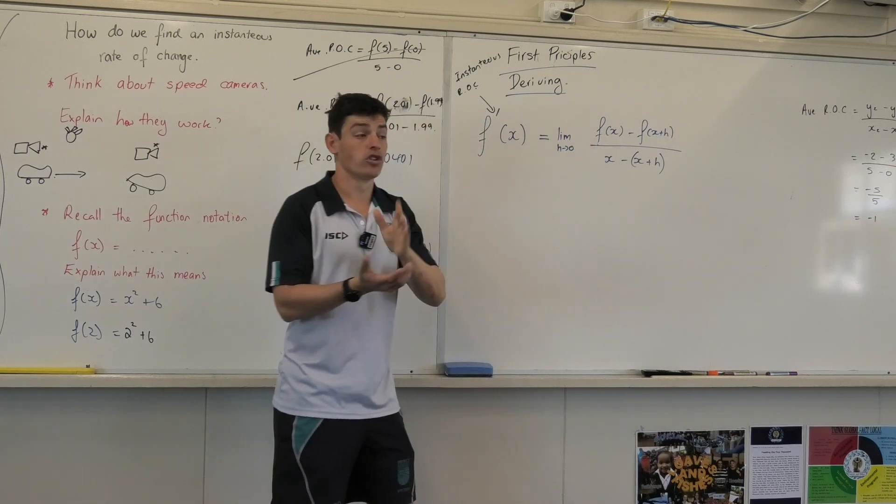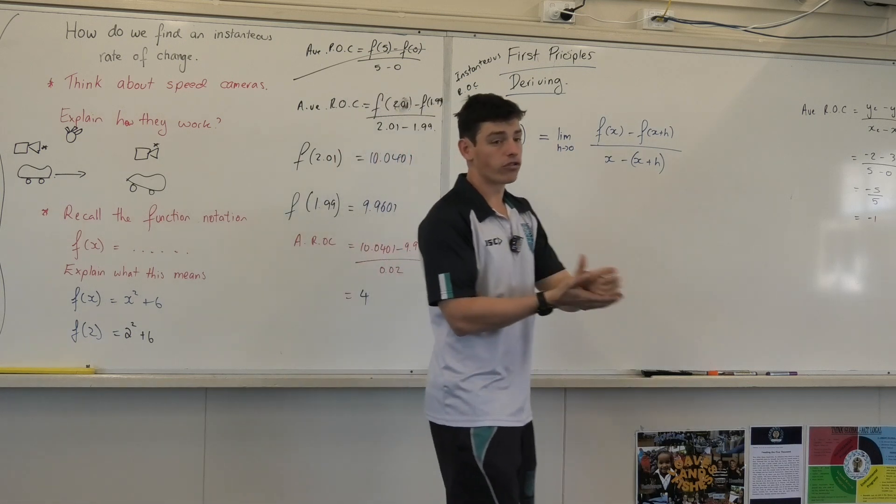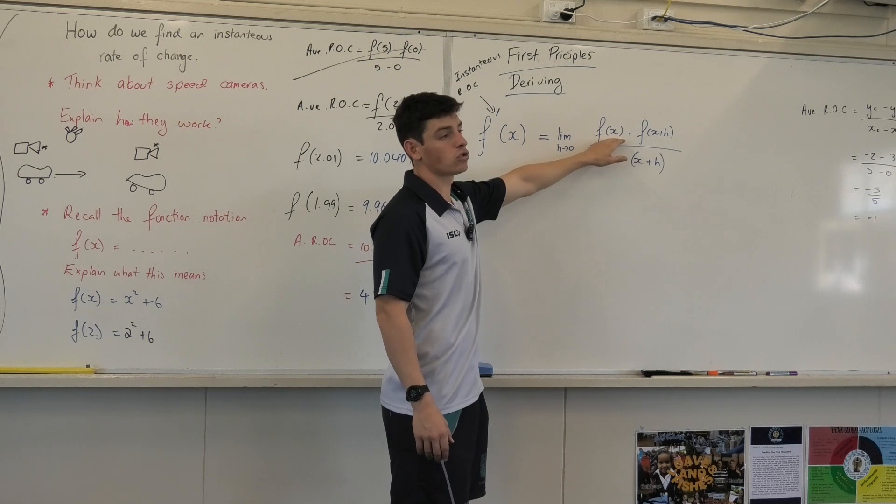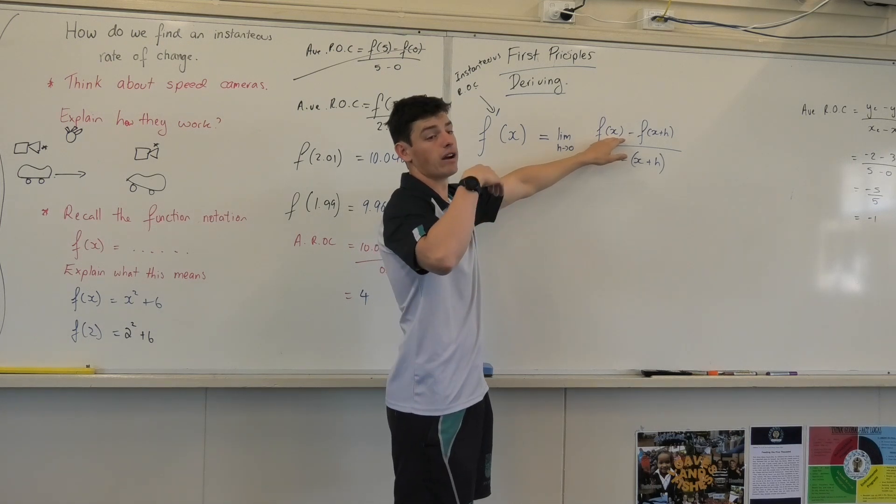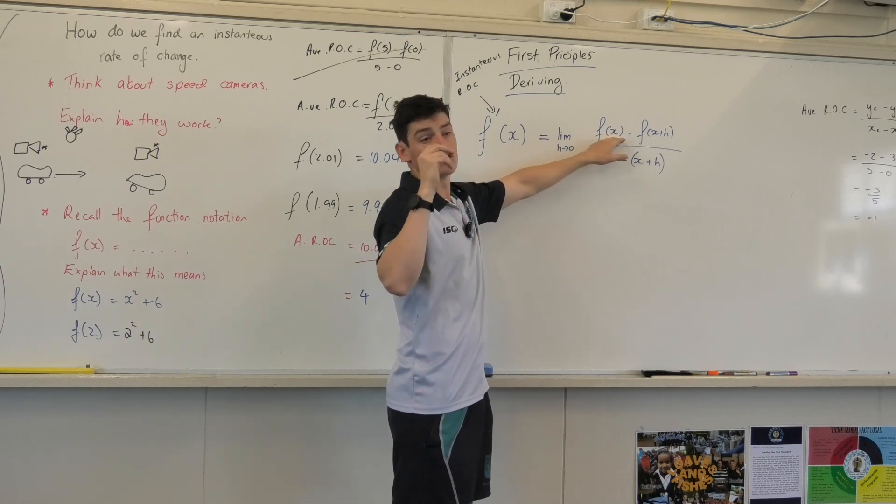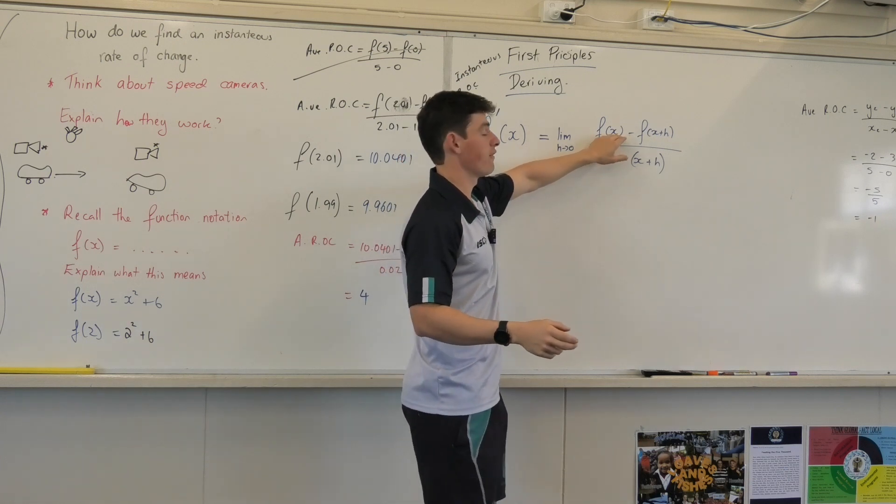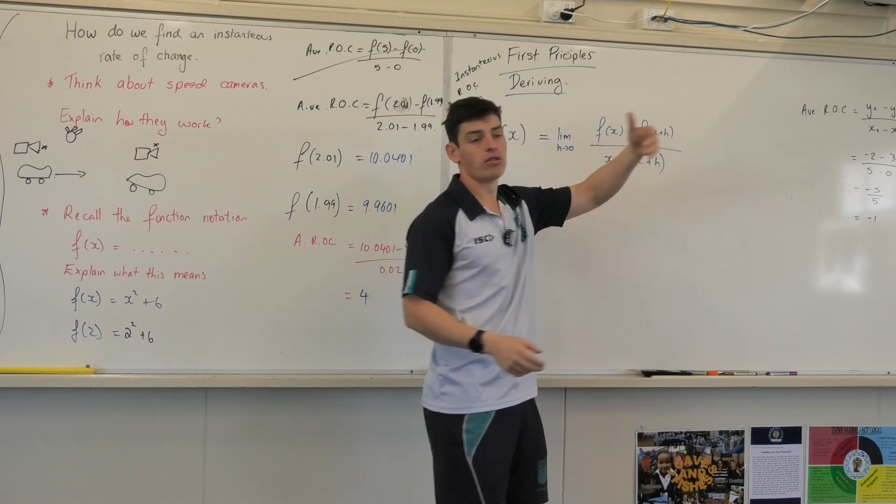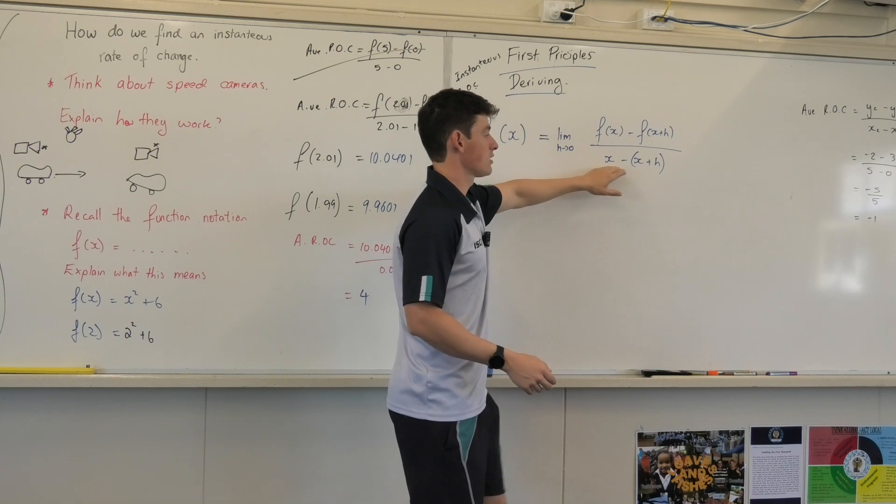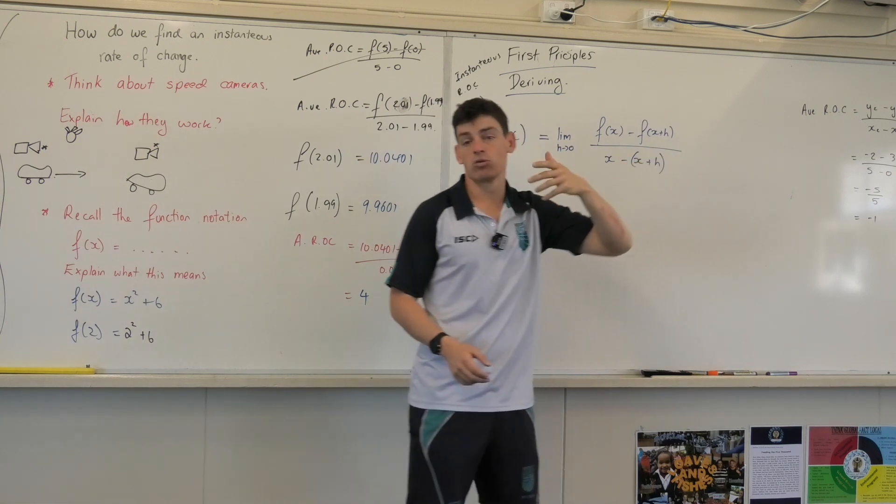Yeah, so h is getting so close. It's not exactly 0, but it's so, so close to 0. So it's sort of like dividing by, you can divide by a number very close to 0. So Sarah's saying our function, minus x plus some really small number, divided by x minus x plus some really small number.